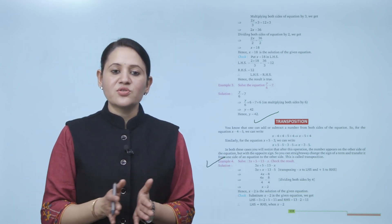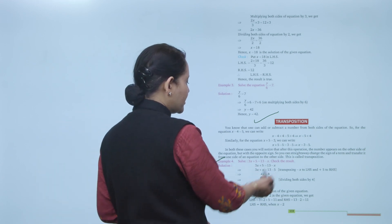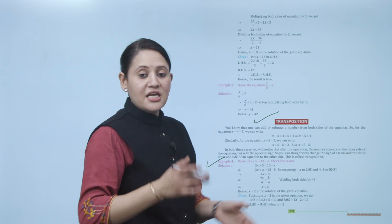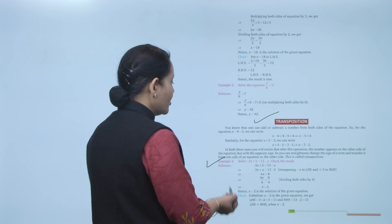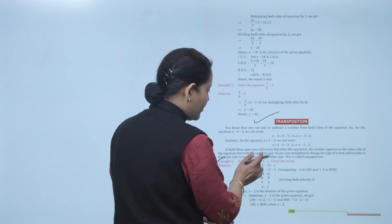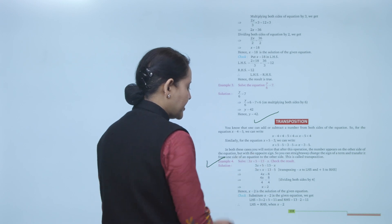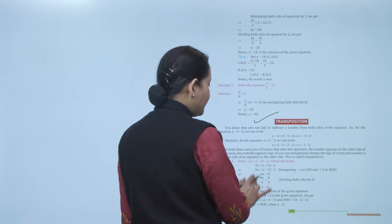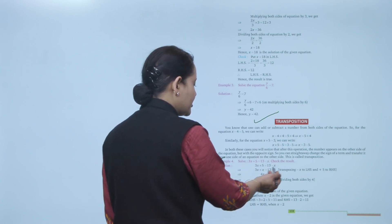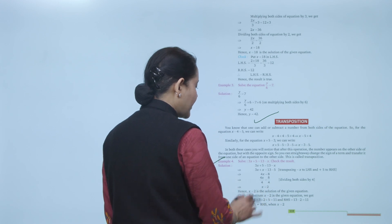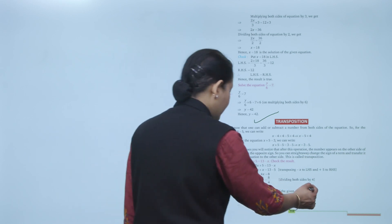Example: solve 3x plus 5 equals 13 minus x. Using transposition, move x from the right-hand side to the left with a sign change to plus x, and move 5 to the right-hand side with a sign change to minus 5. So 3x plus x equals 13 minus 5, giving 4x equals 8, therefore x equals 2.